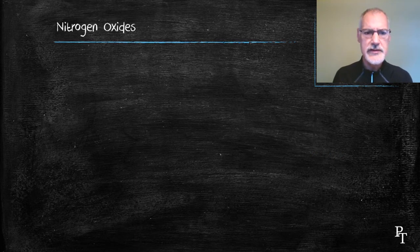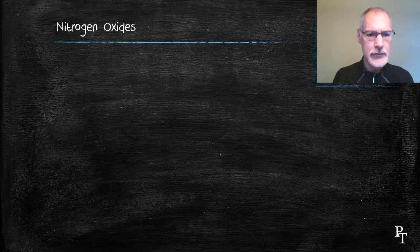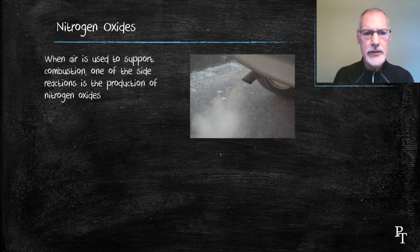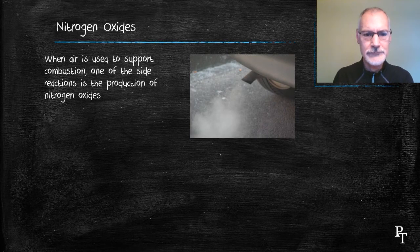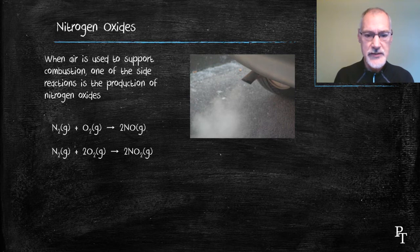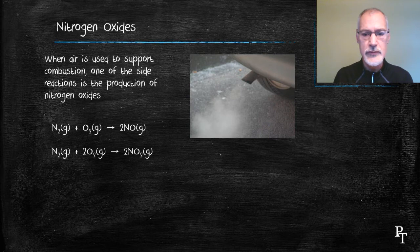Of particular interest are nitrogen oxides and sulfur oxides. Let's look at how these enter our environment. First, whenever air is used to combust a fuel, the nitrogen present in air, which makes up about 90 percent of air, itself can combine with oxygen to produce nitrous oxides. Here's an example of two such reactions. The nitrogen can combine with one oxygen to produce nitrogen monoxide, or with two oxygens to produce nitrogen dioxide.